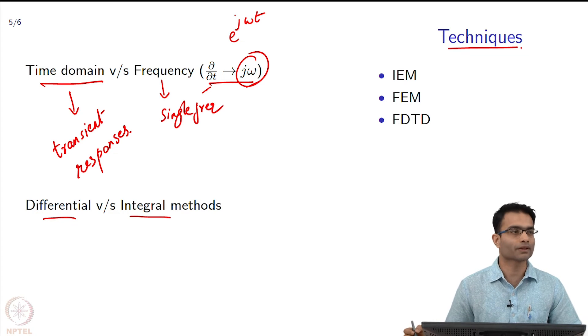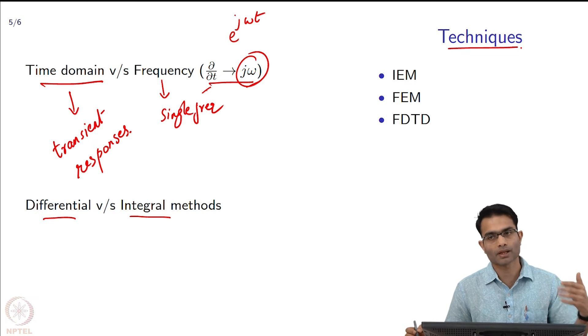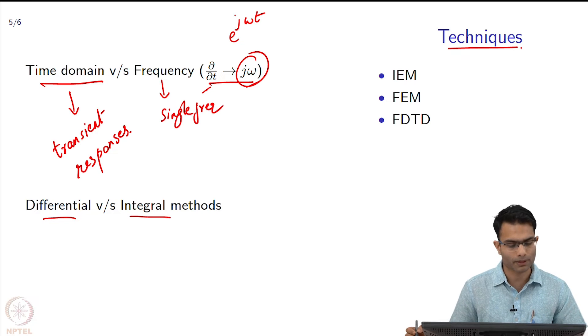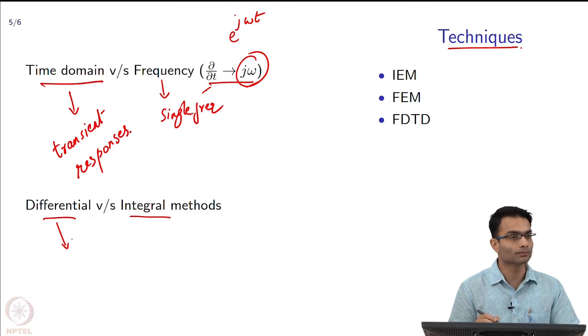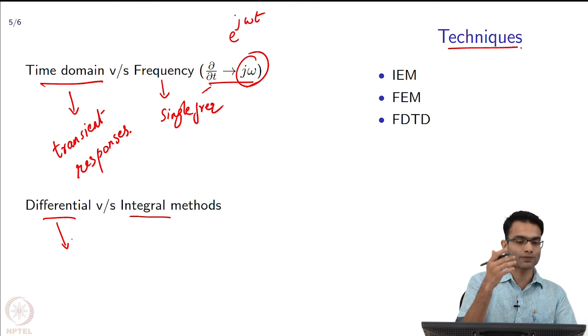Now this may not seem very clear to you in this class, but it will become clear as we go along, but there are a few hints that I can give you. When we look at the differential form, there is d by dt everywhere and d by dx everywhere.